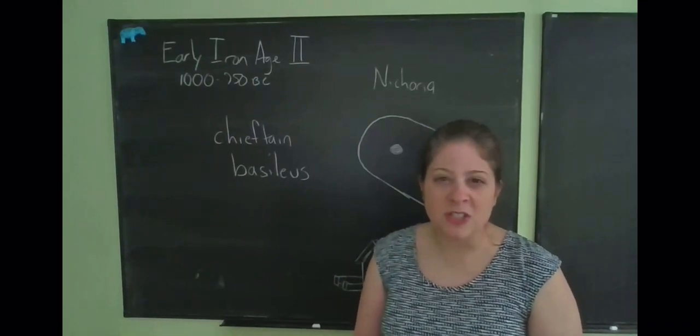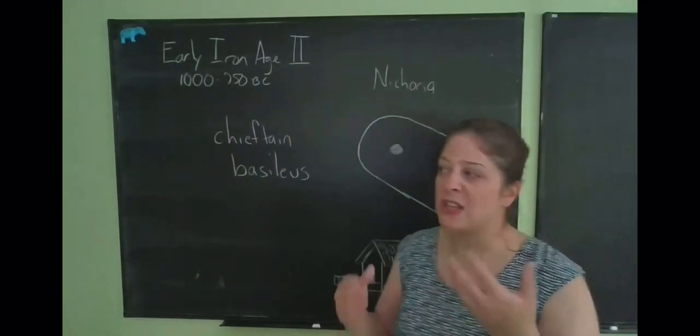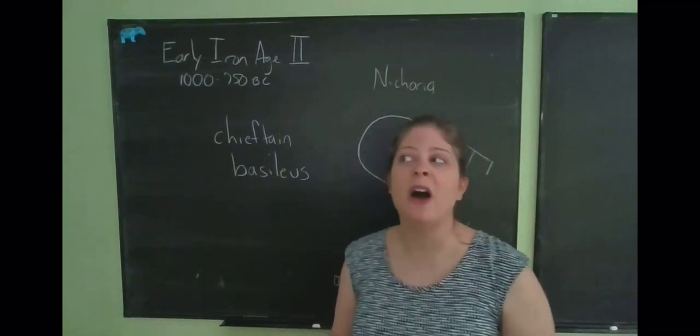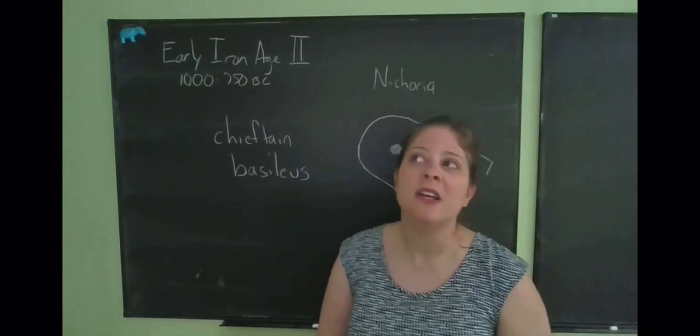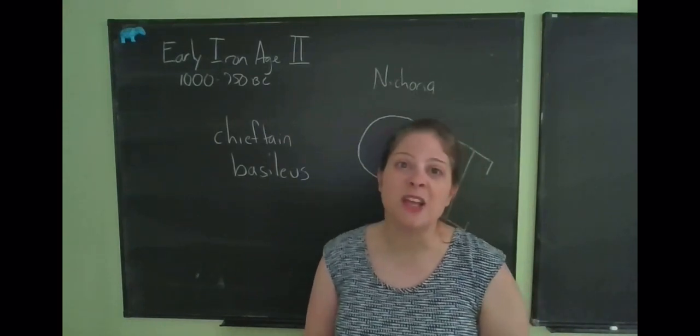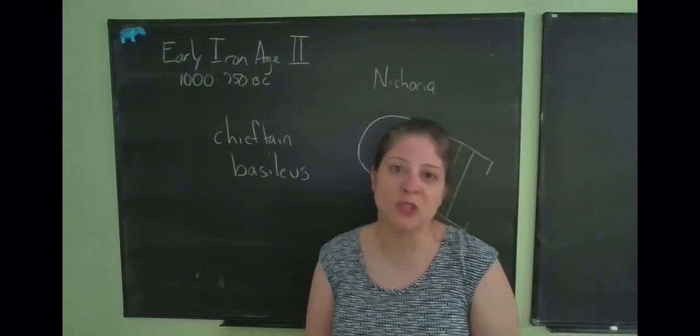So the other major site where we find an example of this is, as we said, Lefkondi in Euboea. We're not going to go into that in detail here because we're going to talk about that much more in class. You're going to look at the evidence surrounding that site, which is known as the Lefkondi heroine, and we'll discuss it in class.